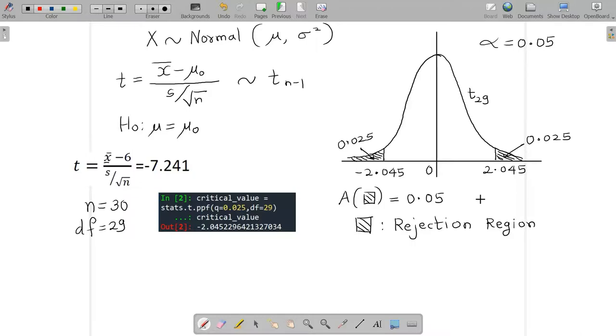If the t statistic lies in between these two values, then we may say that H0 may not be rejected.